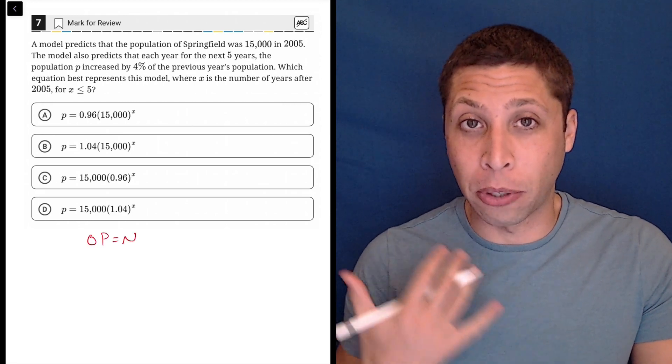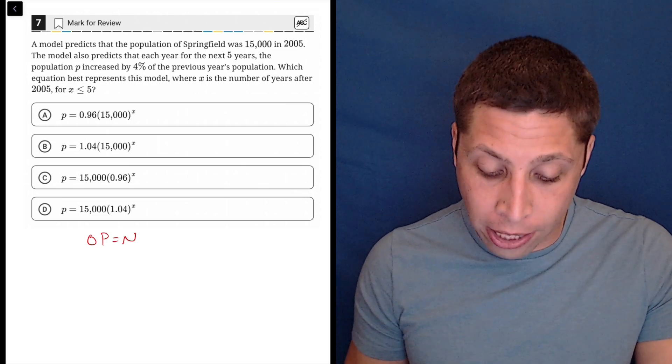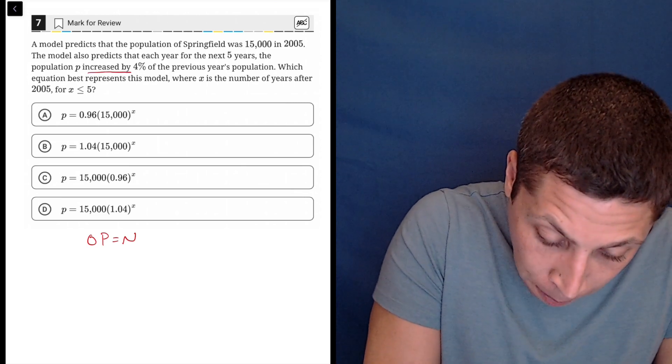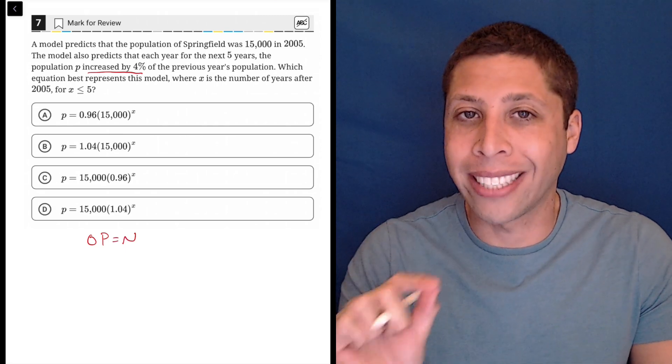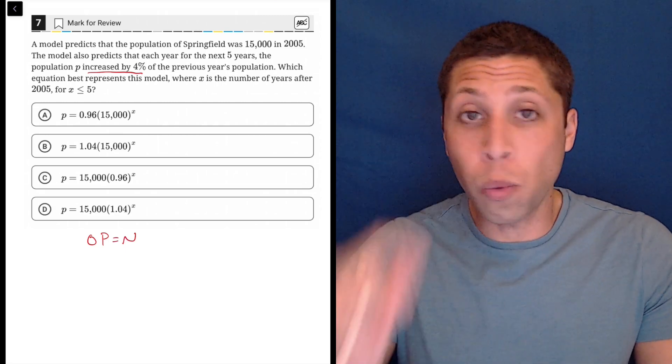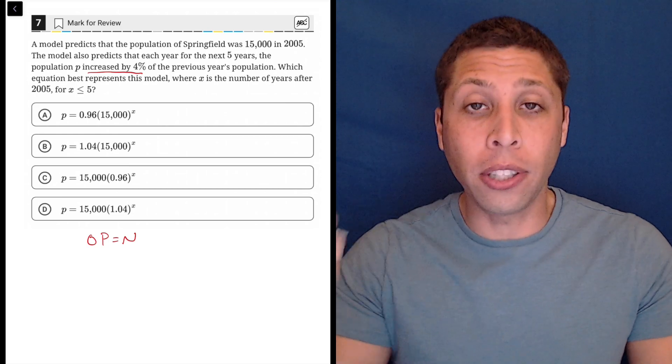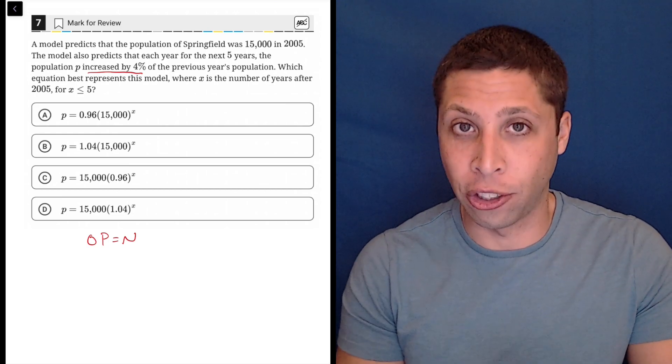First of all, it's not just a percentage, it's a percentage change. It's increased by 4% of the previous year's value. That changes things slightly, plus it's not just a one-time change. It happens every single year and that makes it an exponential equation.